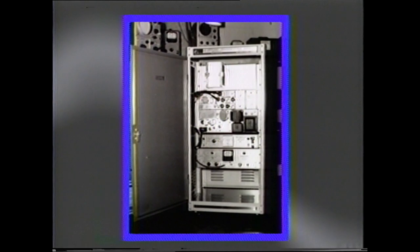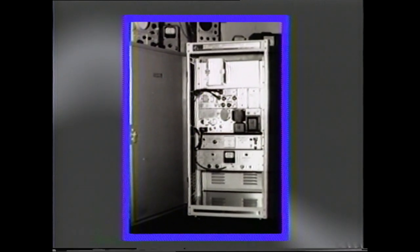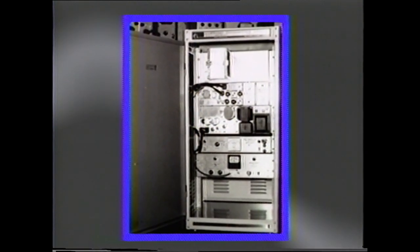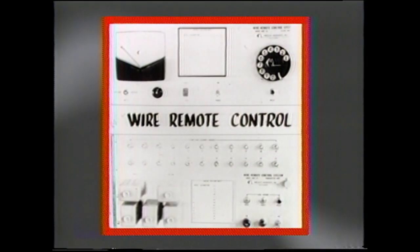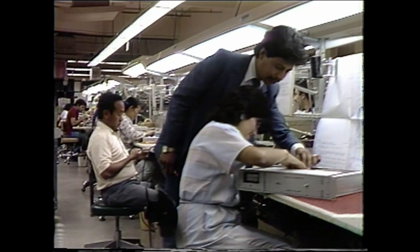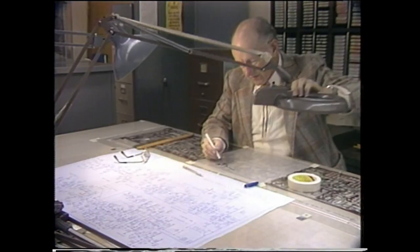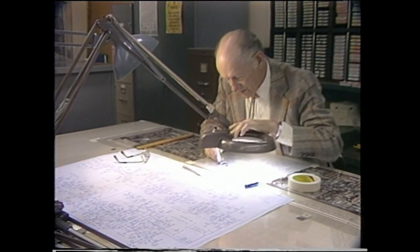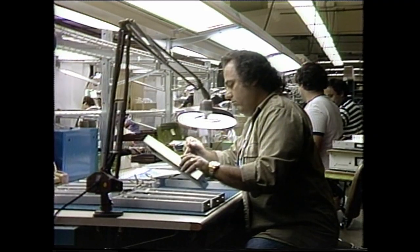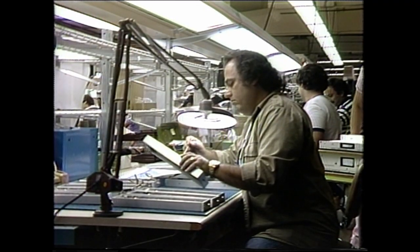In 1960, engineer Jack Moseley produced his first product, an aural studio-to-transmitter link, commonly called an STL. Next was a remote control system, the WRC-10. These two products were the beginning of what is now Moseley Associates Incorporated, a Flow General company. Moseley is the acknowledged world leader in the design, manufacture, and supply of STLs and remote control systems.